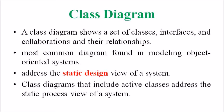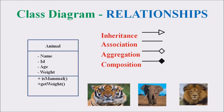A relationship is a collaboration between different classes within a program. There are mainly four different relationships associated with a class diagram: inheritance, association, aggregation, and composition.